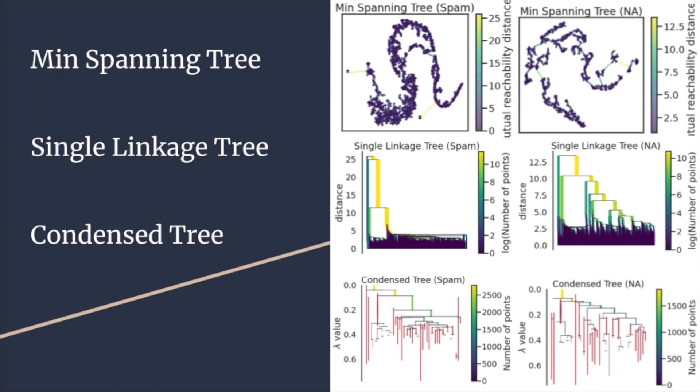The condensed tree shows us a very similar image to the single-linkage tree. However, it is more efficient because it only shows the nodes that are relevant for selecting minimum cluster size.